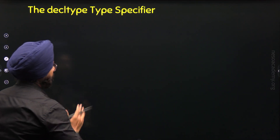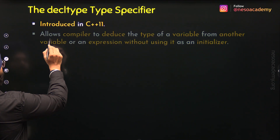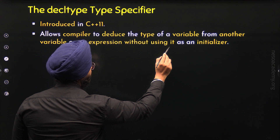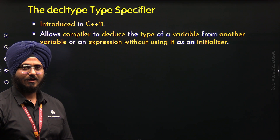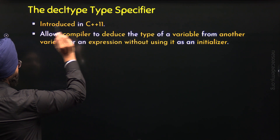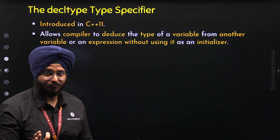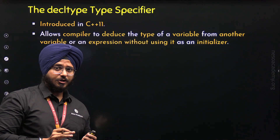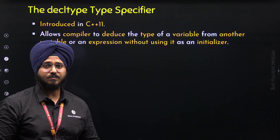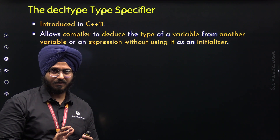So what is the decltype type specifier? The decltype type specifier was introduced in C++11 and it allows the compiler to deduce the type of a variable from another variable or an expression without using it as an initializer. Just like the auto type specifier, it allows the compiler to deduce the type of a variable automatically. But it deduces the type a little differently from the auto type specifier — the methodology is quite different.